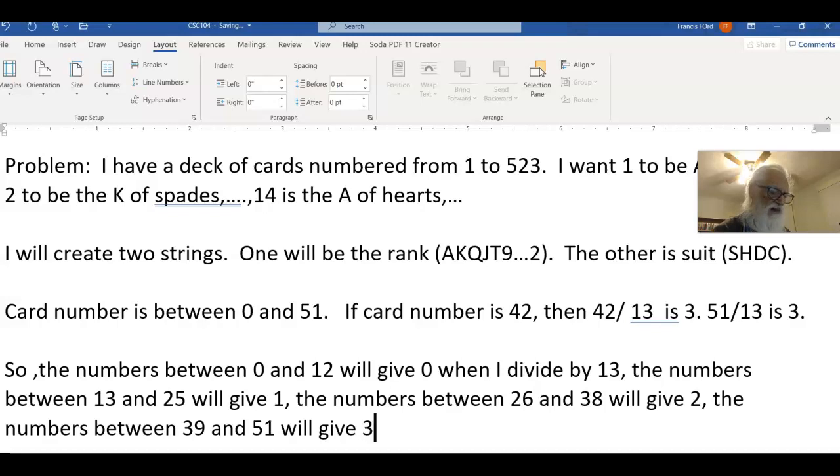the numbers between 39 and 51 will give 3. So I have 4 different numbers, and the 0 is going to pick the spade for me, the 1 is going to pick the heart for me, the 2 is going to pick the diamond for me, and the 3 is going to pick the club.